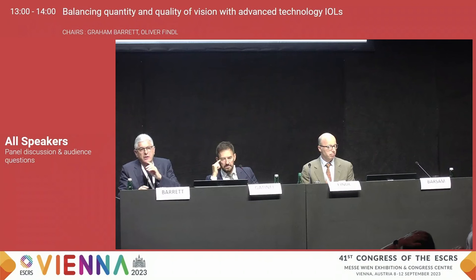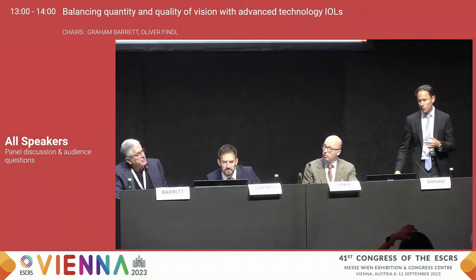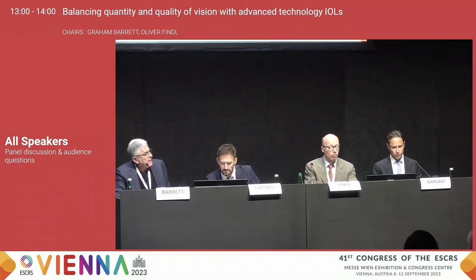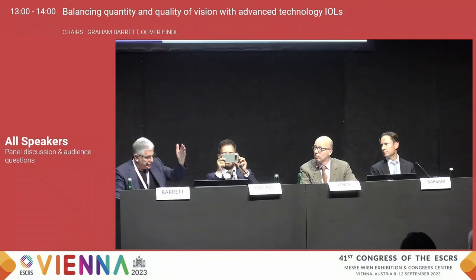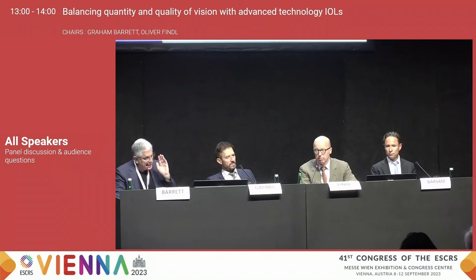Thank you, Alan. We'll have some time for discussion. The theme of the symposium is all about balance. Do you think the Ray-1 EMV has got the balance right? You have to choose your line with your fulcrum, and then you make up what you don't have with monovision. That's the concept. Would you trade off — would you prefer a little bit more reading, or is maintaining quality for distance and low halo more important?